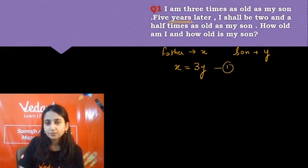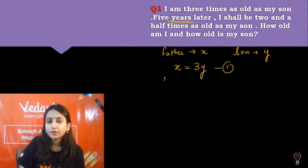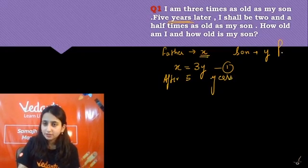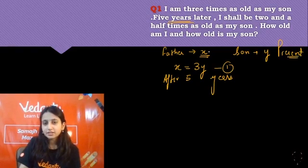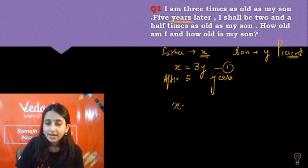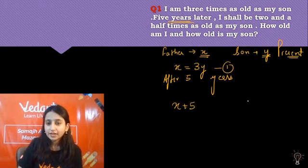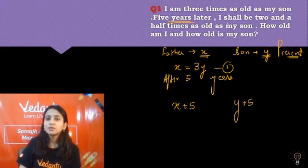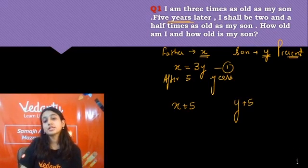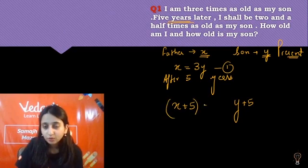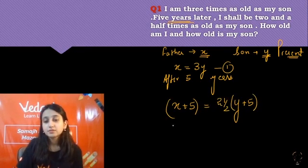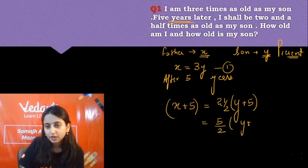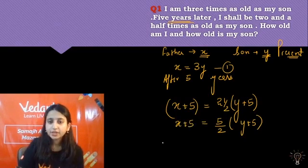Five years later, if father's present age is x, then after 5 years it becomes x plus 5. Similarly, son's present age is y, so after 5 years it becomes y plus 5. The father shall be two and a half — that is five by two — times the son's age. So our second equation is: x plus 5 equals five by two times y plus 5. Let's simplify this equation.